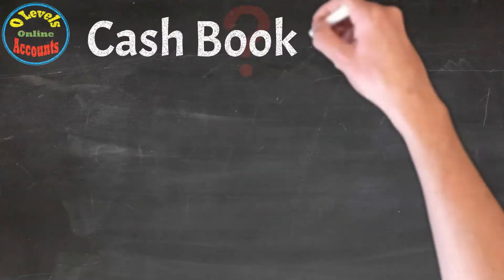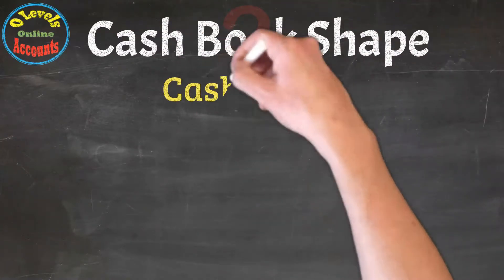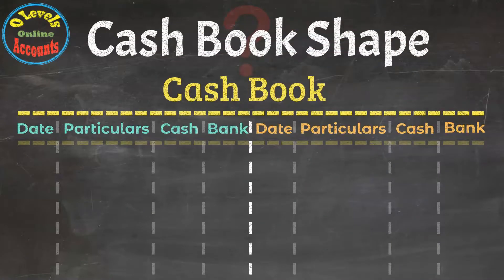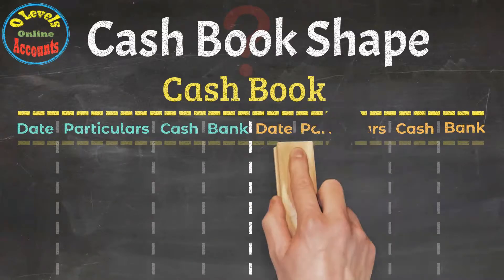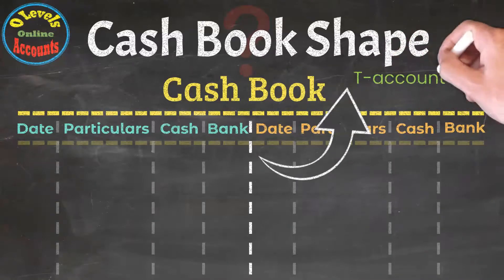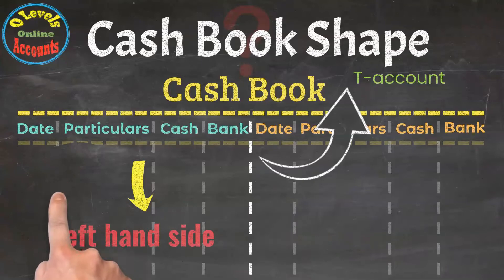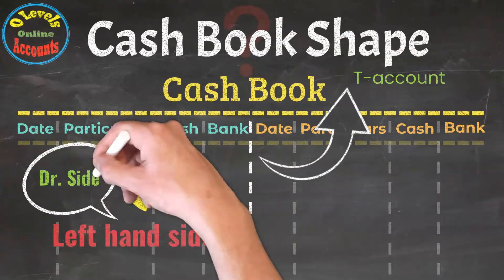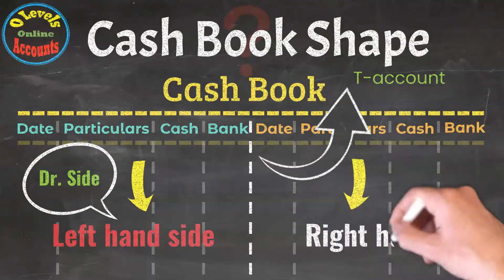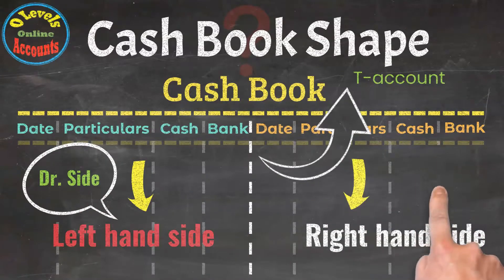How does the Cash Book look like? Cash Book has date, particulars, and cash at bank columns on both sides. It also looks like a T-account. It has two sides: the left-hand side called the debit side, and the right-hand side called the credit side.